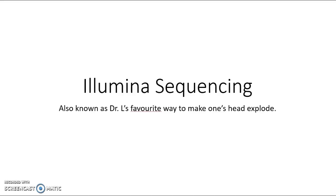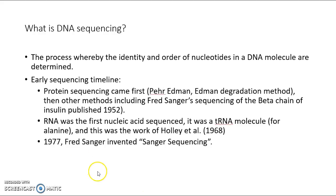This is Dr. Lauren Lownden from King State College, and I'm going to be talking to you today about Illumina sequencing, which I also like to think of as the topic that makes my head explode. I've become actually rather obsessed with trying to understand this very complex form of DNA sequencing. This is going to be a two or possibly three-part lecture series, and I'm going to start by talking about DNA sequencing generally. Let's define DNA sequencing as the process whereby the identity and order of nucleotides in a DNA molecule are determined.